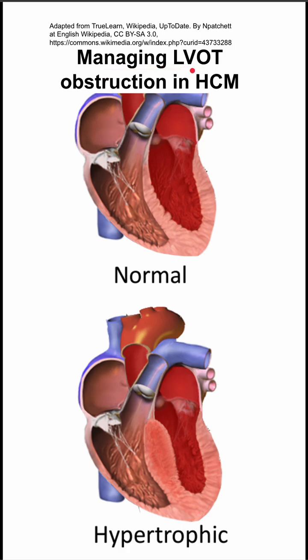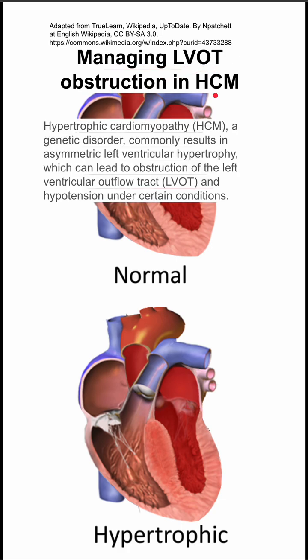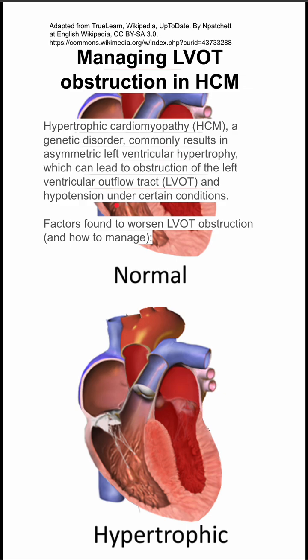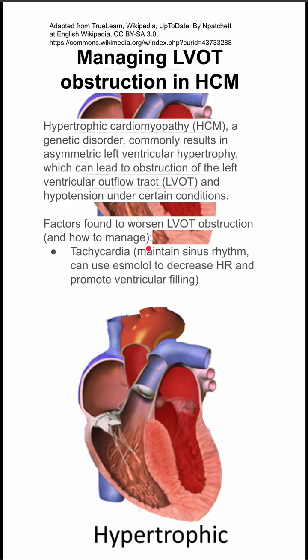This is how to manage left ventricular outflow tract obstruction in hypertrophic cardiomyopathy. Hypertrophic cardiomyopathy is a genetic disorder which commonly results in an asymmetric left ventricular hypertrophy, which can lead to obstruction of the left ventricular outflow tract and in some cases hypotension. There are many factors that worsen the left ventricular outflow tract obstruction, and I'll be listing those as well as how to manage them.